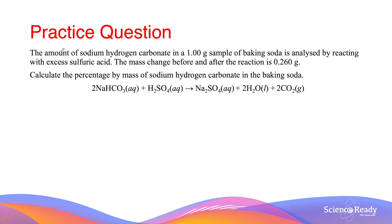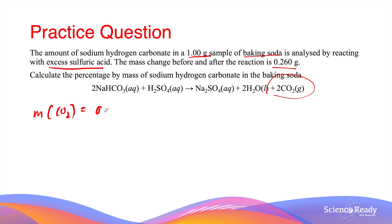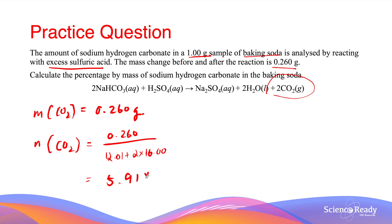To determine the amount of sodium hydrogen carbonate in a 1 gram sample of baking soda using volatilization, the sample is reacted with excess sulfuric acid. The mass change before and after the reaction is 0.26 grams. Assuming this mass decrease is entirely due to CO₂ production, the mass of carbon dioxide is 0.26 grams. Dividing by the molar mass of CO₂ gives 5.91 × 10⁻³ moles of carbon dioxide.